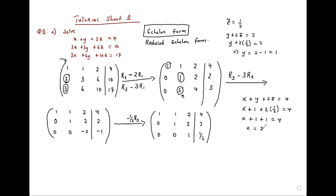So I found the values of x, y, and z. But if we wanted, we could have reduced this further. We'll say: go to row 1 and subtract row 2.